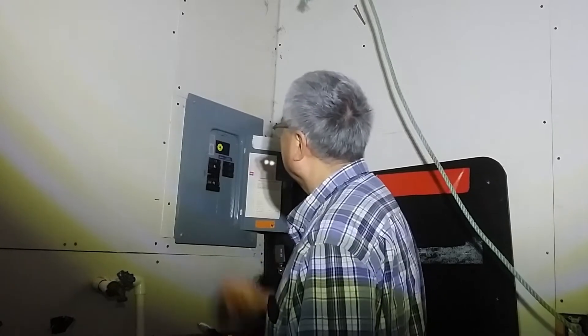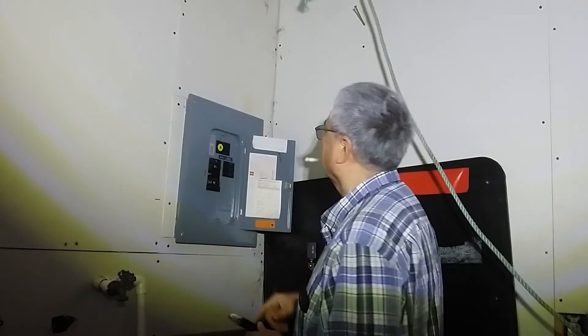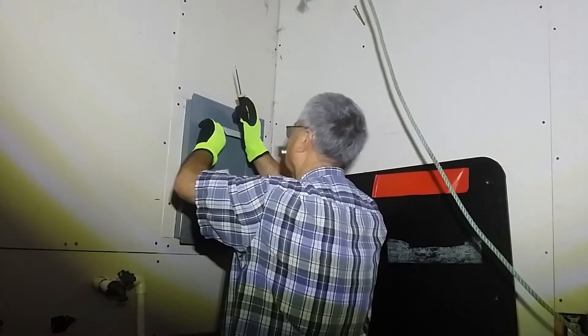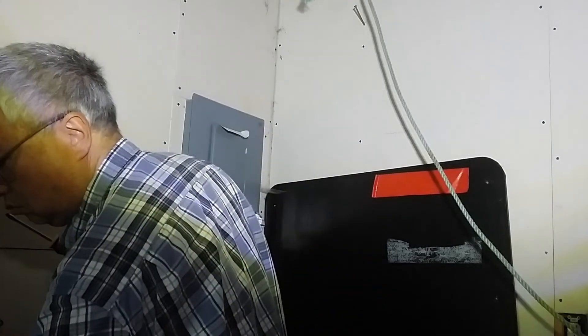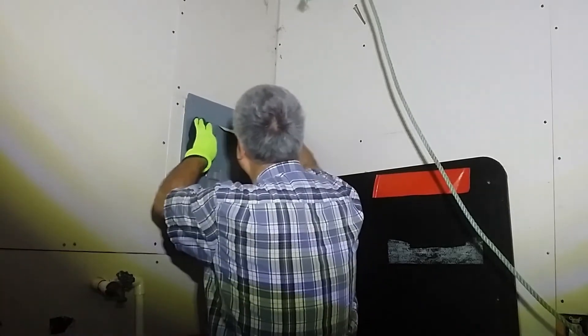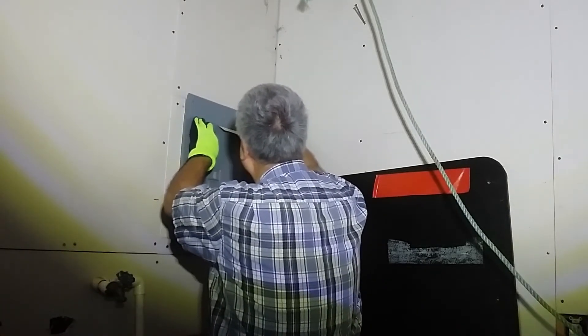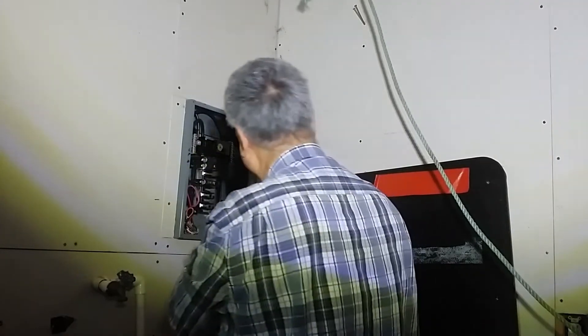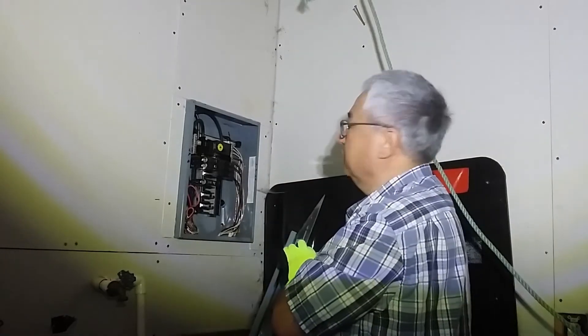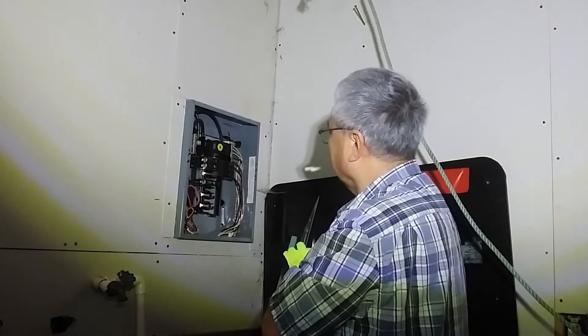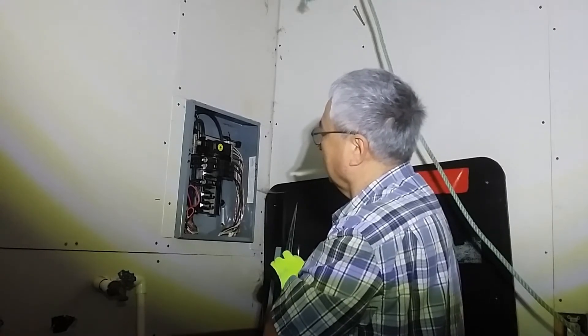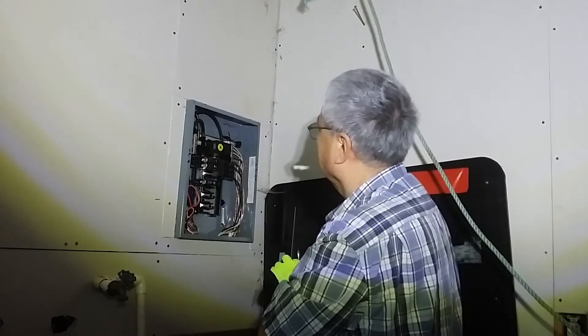All right, now that I got this off, I'm going to go ahead and take the cover off. When you loosen these screws, a lot of these power panels, there's nothing holding it on there except those screws. There are some that you can release the screws and it's got a little latch that'll hold the door on there for you until you're ready to remove it. So make sure you take precautions.